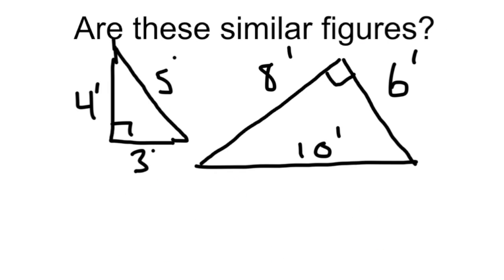Here we have two right triangles and we want to see if they are similar. We can see that they both have right angles. Now let's check to see if the sides are proportional.